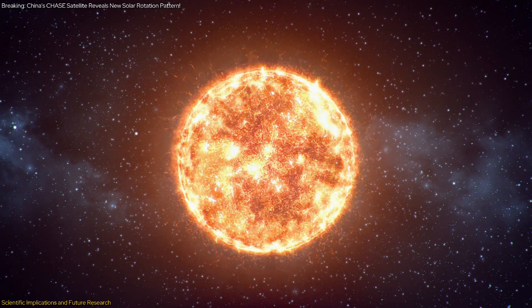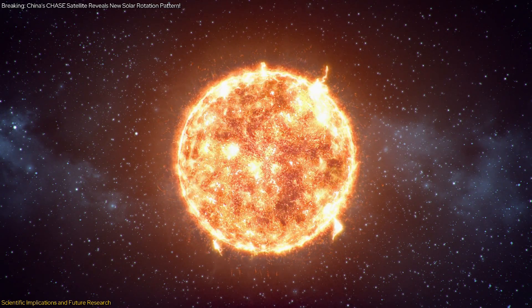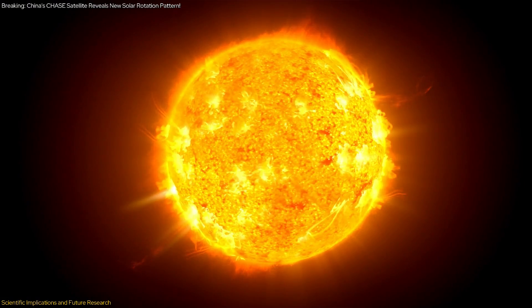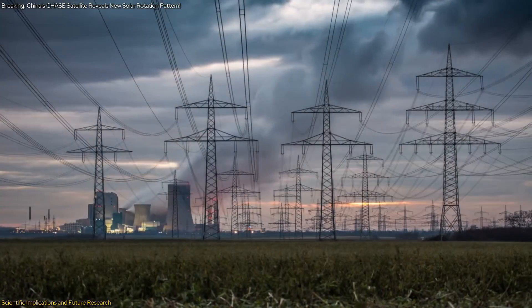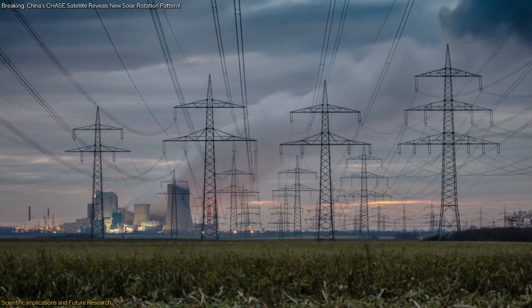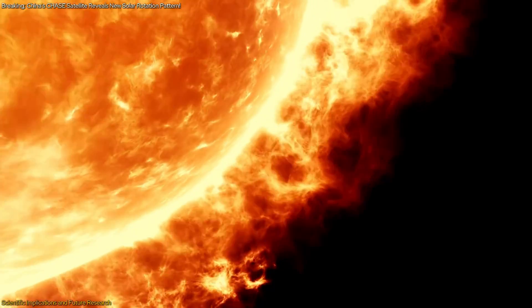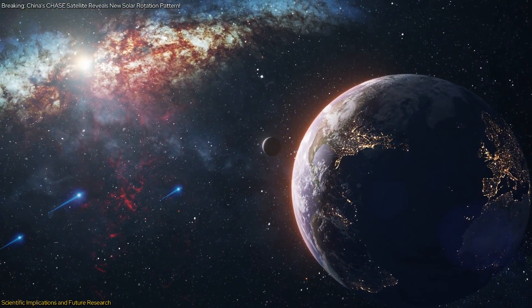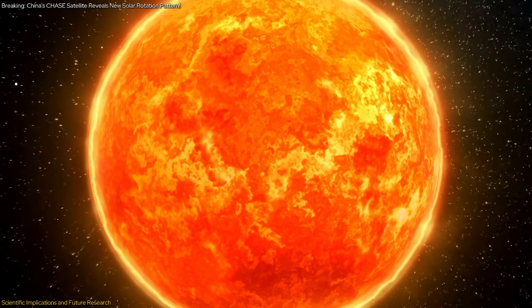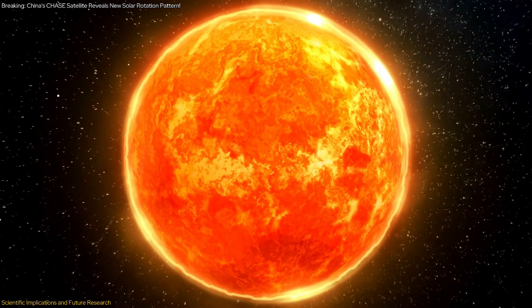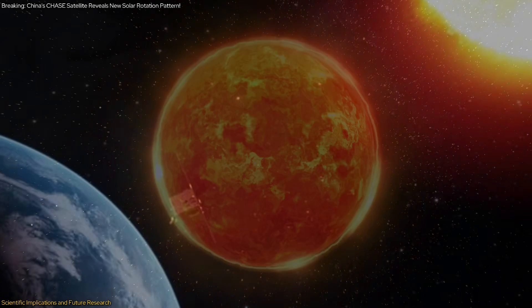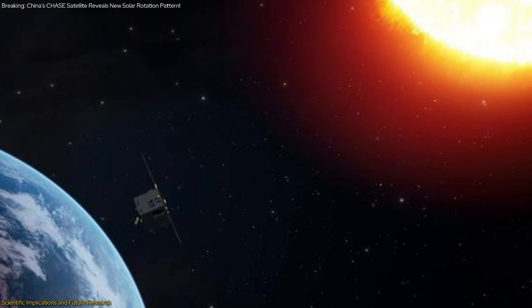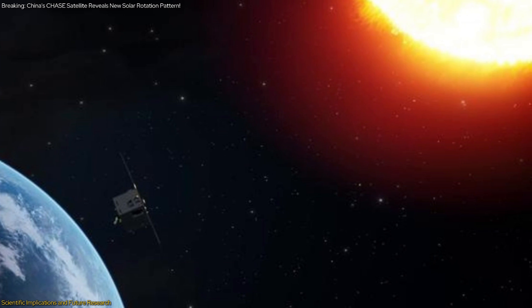In addition to enhancing our understanding of the sun, this research has practical applications for space weather forecasting. Accurate predictions of solar activity are crucial for protecting satellites, astronauts, and even power grids on Earth from the effects of solar storms. By improving our models of the sun's behavior, we can develop better strategies for mitigating the impact of space weather on our technology and infrastructure. The discovery also underscores the importance of continuous and high-resolution monitoring of the sun. The Chase satellite's ability to maintain a fixed position relative to the sun and collect detailed data over extended periods has been crucial in making these observations possible.